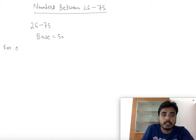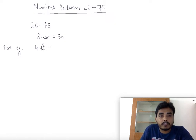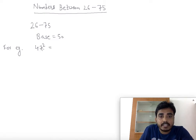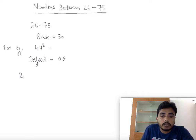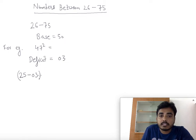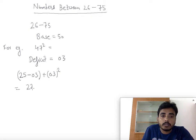For example, let's find the square of 47. We first check whether the number is greater or lesser than 50 — 47 is lesser than 50 by 3. So the deficit is 03. We compute 25 minus 3, which is 22, and 3 squared is 09. We write the last two digits, so the square of 47 is 2209.